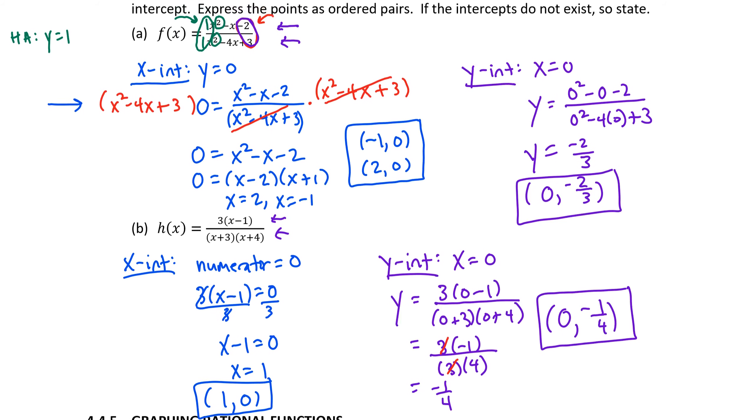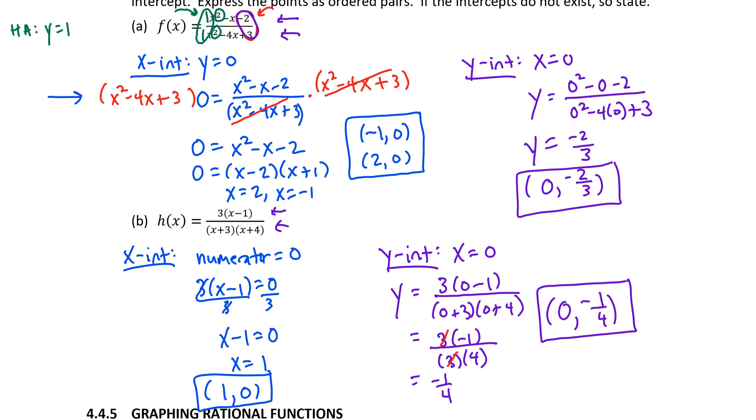Okay, so just a quick summary. The zeros of the numerator give me x-intercepts. We express those as ordered pairs. The zeros of the denominator give me restricted values for the domain and also the location of vertical asymptotes, which we would express as equations.